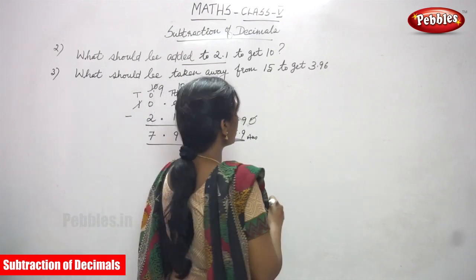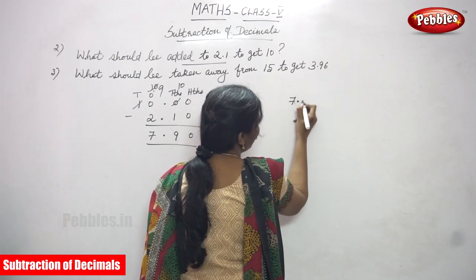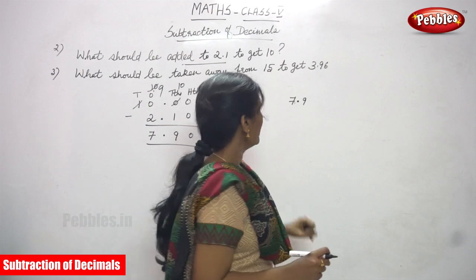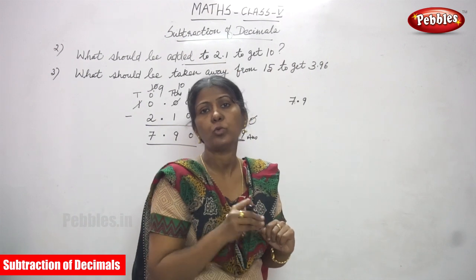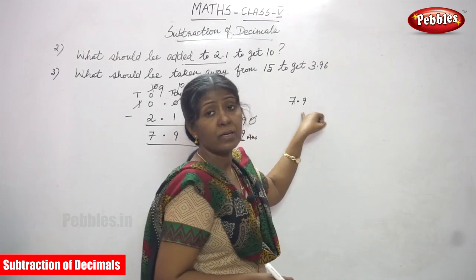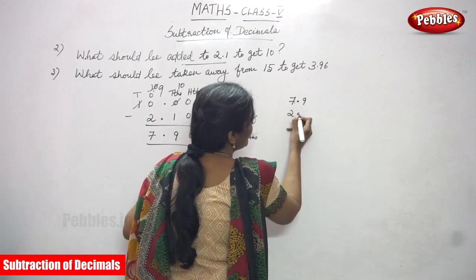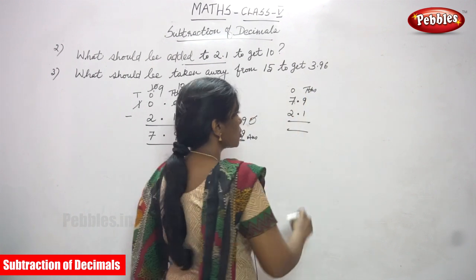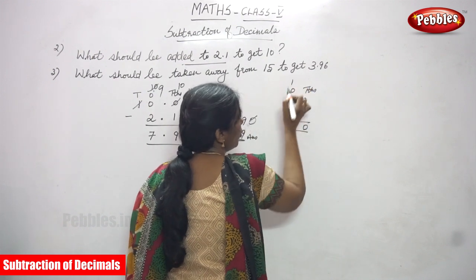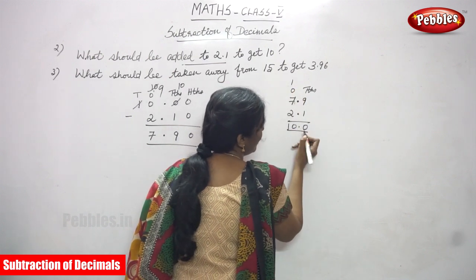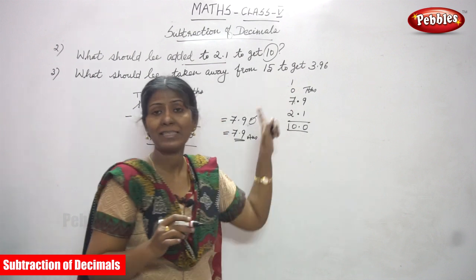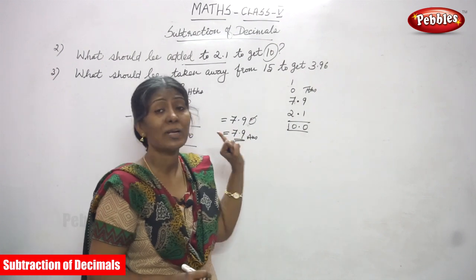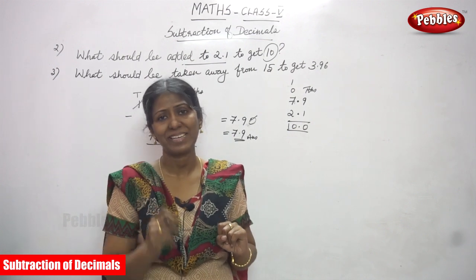So, the answer is 7.9. Just check whether the answer is right or wrong. The question is: what should be added to 2.1? So, 7.9 is the answer we found. Now, 7.9 add with 2.1 — this is the 1's place and this is the 10ths place. So, 9 plus 1 you can get 10. Carry over 1. So, 7 plus 1 is 8, and 8 plus 2 is 10. The answer is 10. Now you got the answer 10. So, whatever sum you have done, the answer 7.9 is the right answer. This is the number that should be added with 2.1 to get 10.